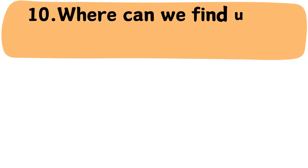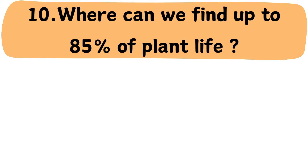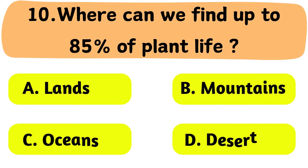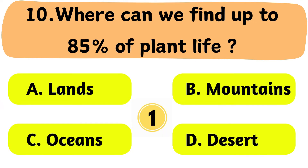Question No. 10: Where can we find up to 85% of plant life? A. Lands. B. Mountains. C. Oceans. D. Desert.